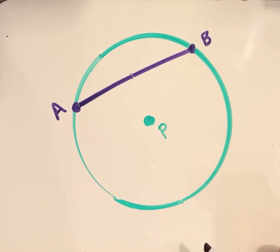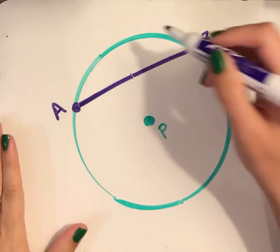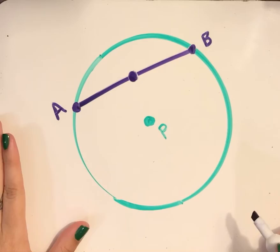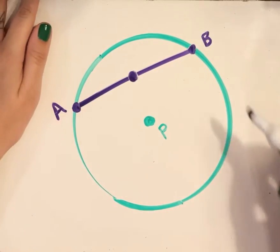I'm going to start by bisecting this chord. I'm going to identify its midpoint. So if the midpoint is right here, I'm going to connect a radius.